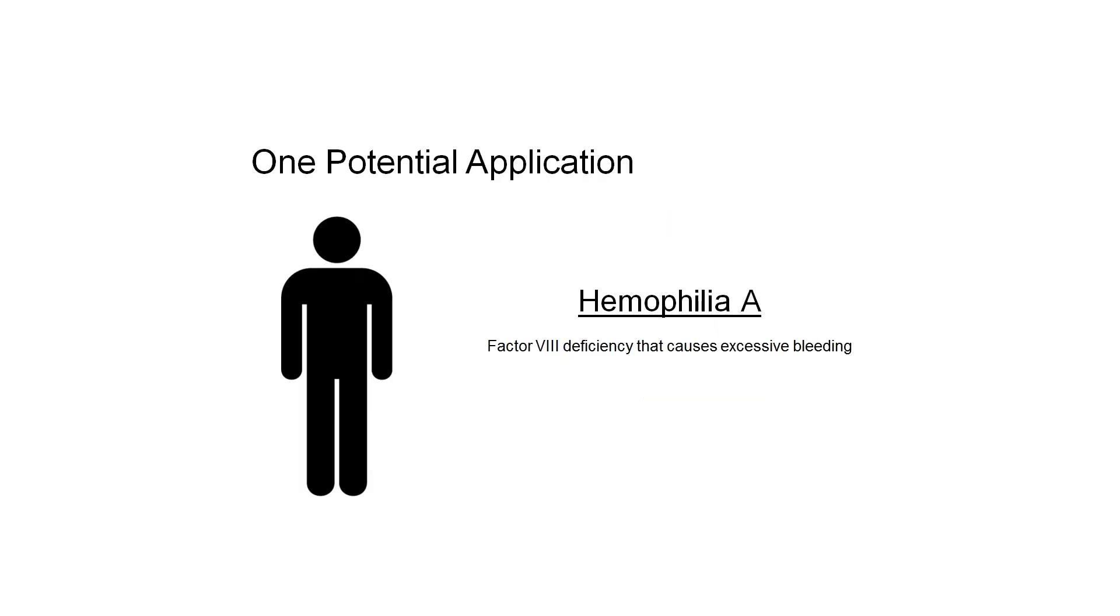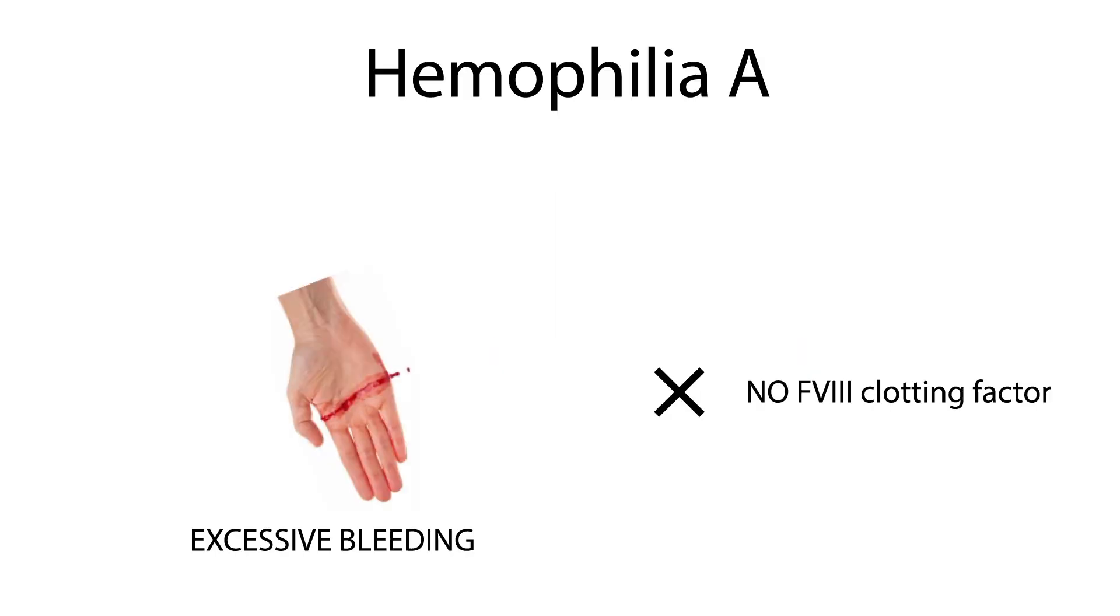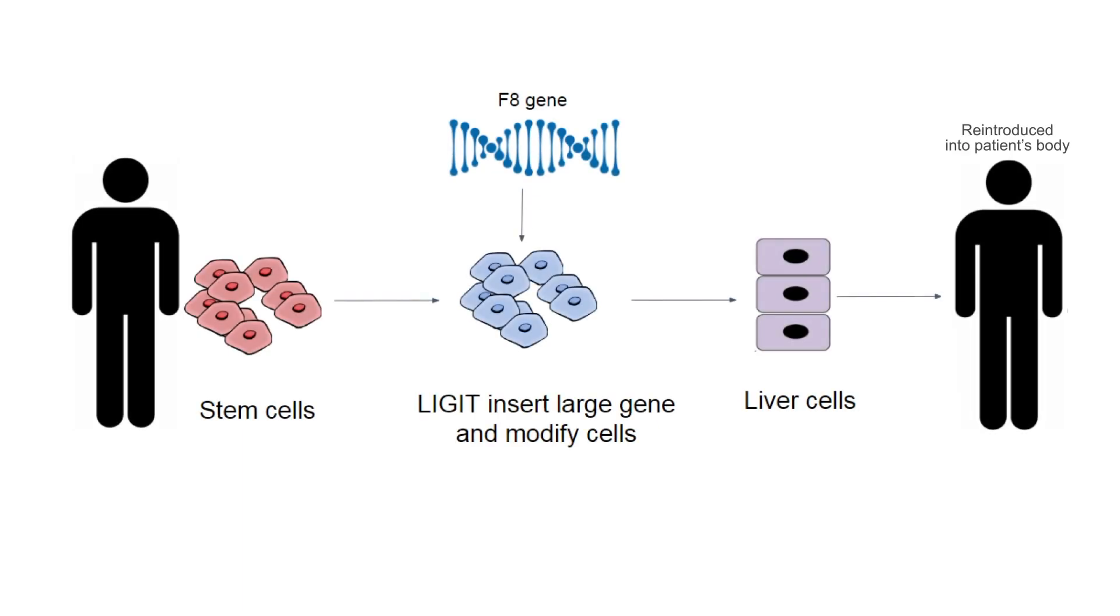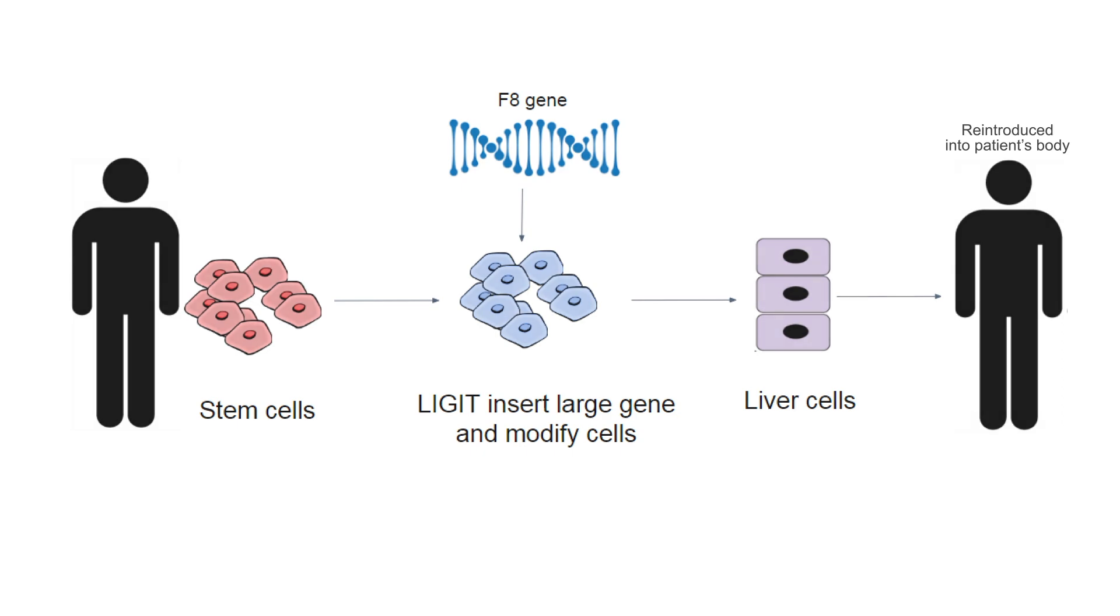To give an example of one application where insertion of large therapeutic gene is required: gene therapy for hemophilia A. Hemophilia A is a bleeding disorder where one of the clotting factors, Factor 8, is missing. In this case, LEGIT is used to engineer patients' iPSCs with large therapeutic F8 gene, followed by differentiation into liver cells and transplantation of corrected cells to restore the activity of missing protein in the patients.